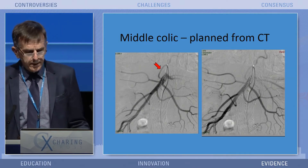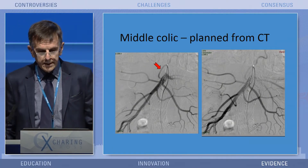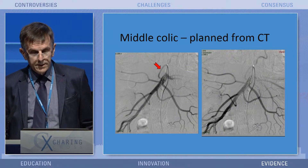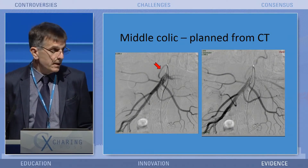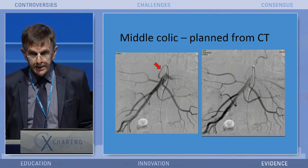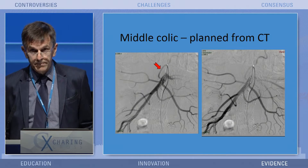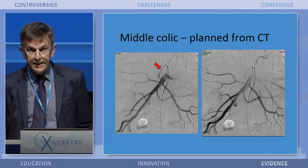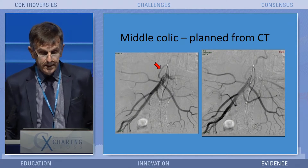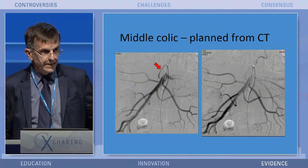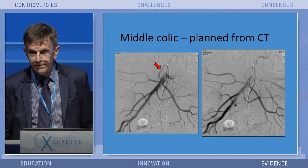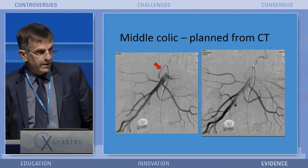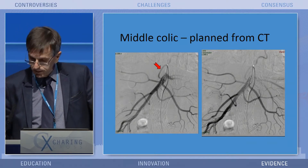In answer to one of Rob's questions, whether I embolize the nidus or the stem of the IMA — it depends on the ultrasound whether it tells me it's a type 2A or a type 2B endoleak. If it really looks on ultrasound classically like a pseudoaneurysm with flow in and out and no other flow, then I'll just embolize the stem. Otherwise I'll embolize the nidus also.